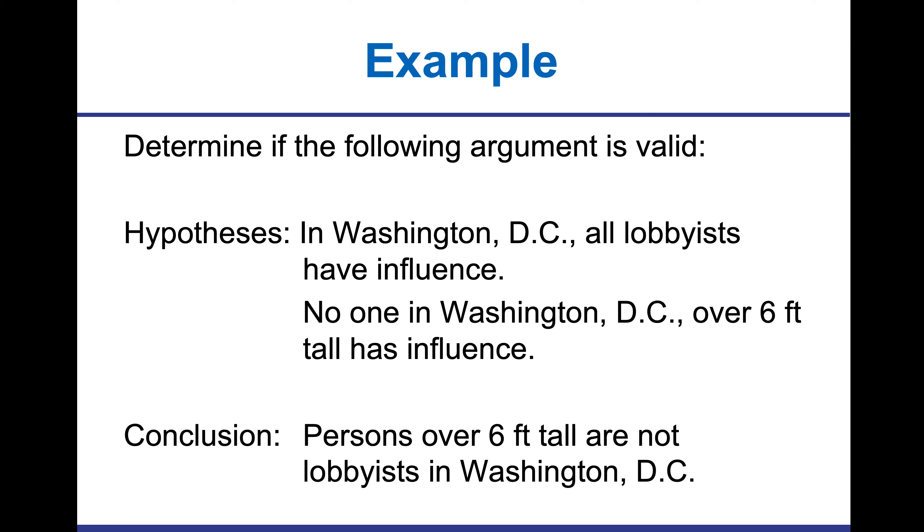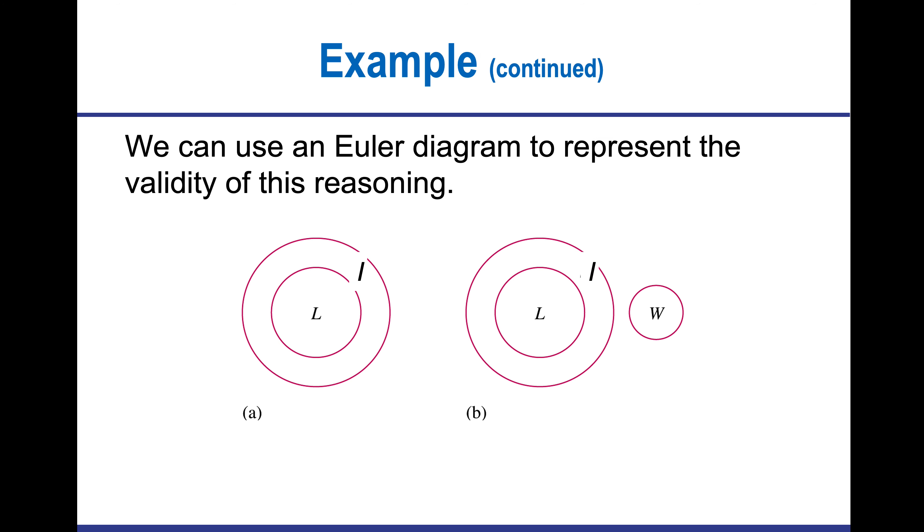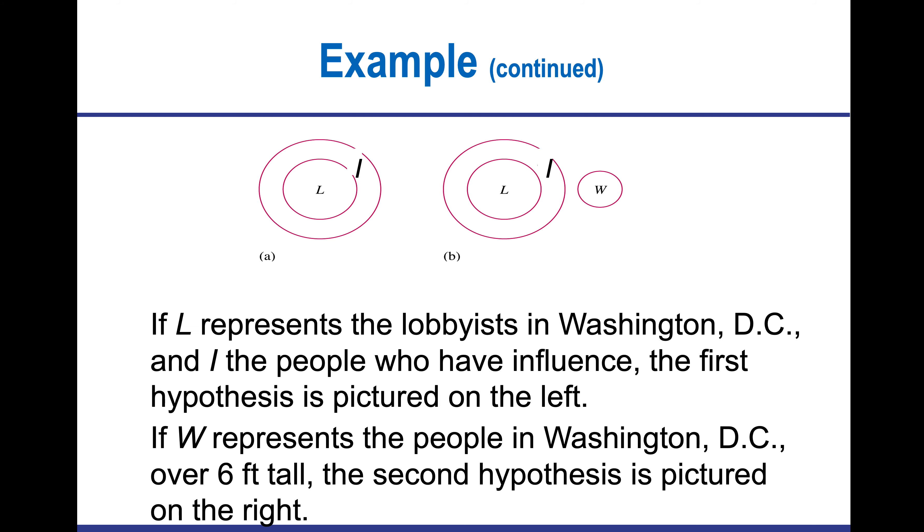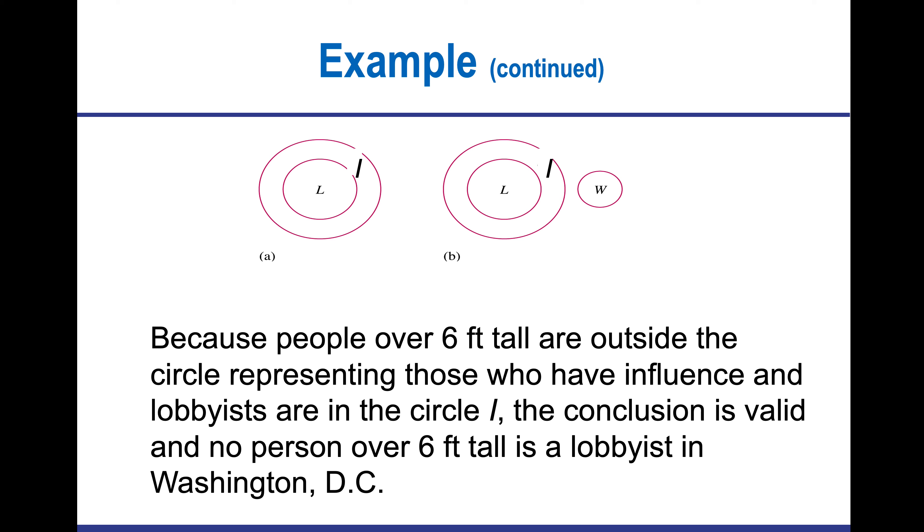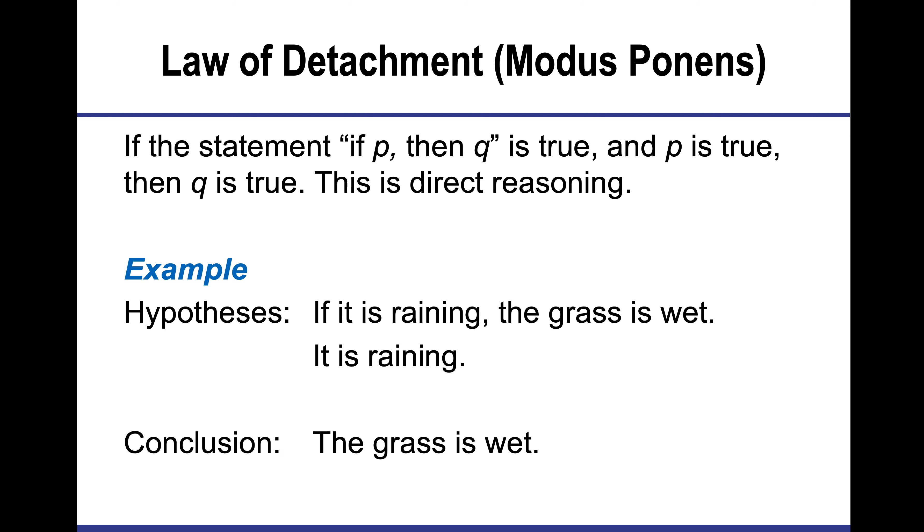If I determine the following argument is valid: In Washington DC, all lobbyists have influence. No one in Washington DC over six feet tall has influence. The conclusion here would be that people over six feet tall are not lobbyists if all lobbyists have influence. We can look at the validity of this reasoning with these diagrams. If L represents the lobbyists and lowercase i is the people who have influence, the first hypothesis is pictured on the left. W represents people over six feet tall, which would be on the right. Because people over six feet tall are outside the circle of lobbyists, the conclusion is valid.